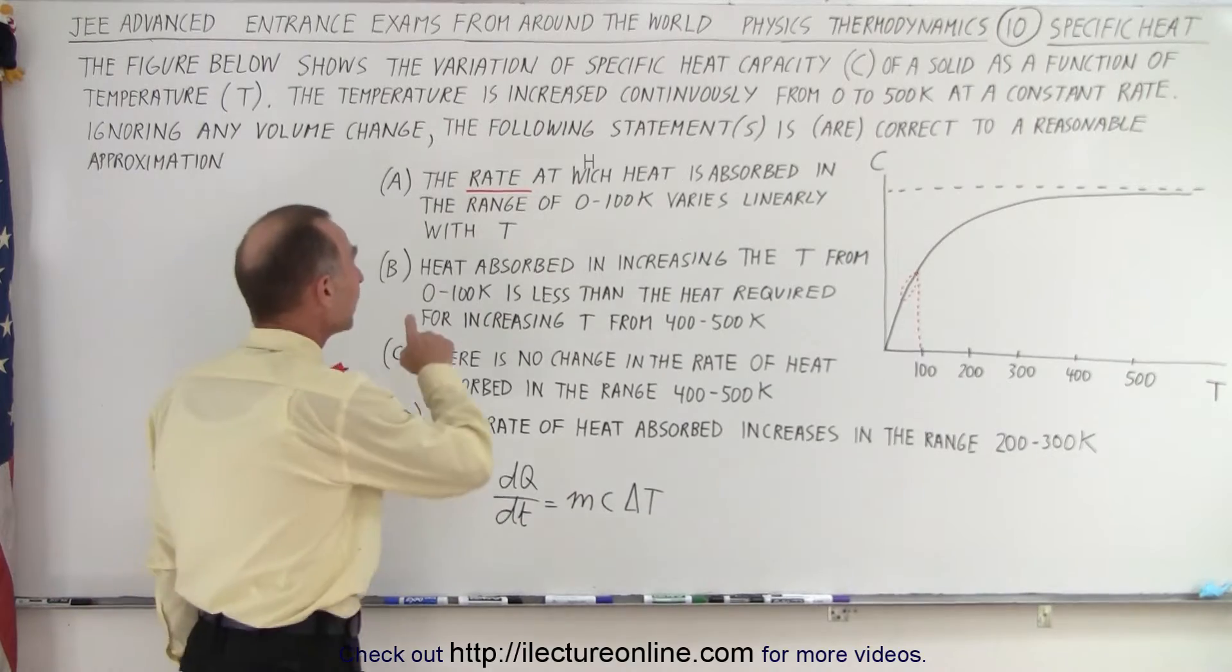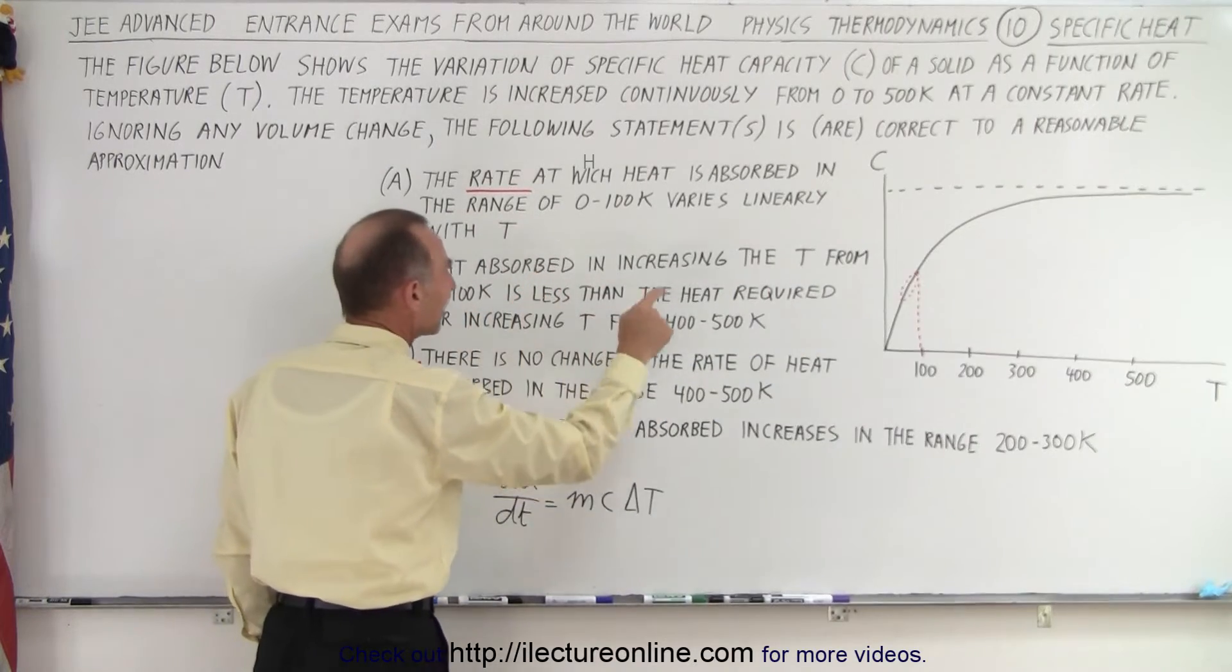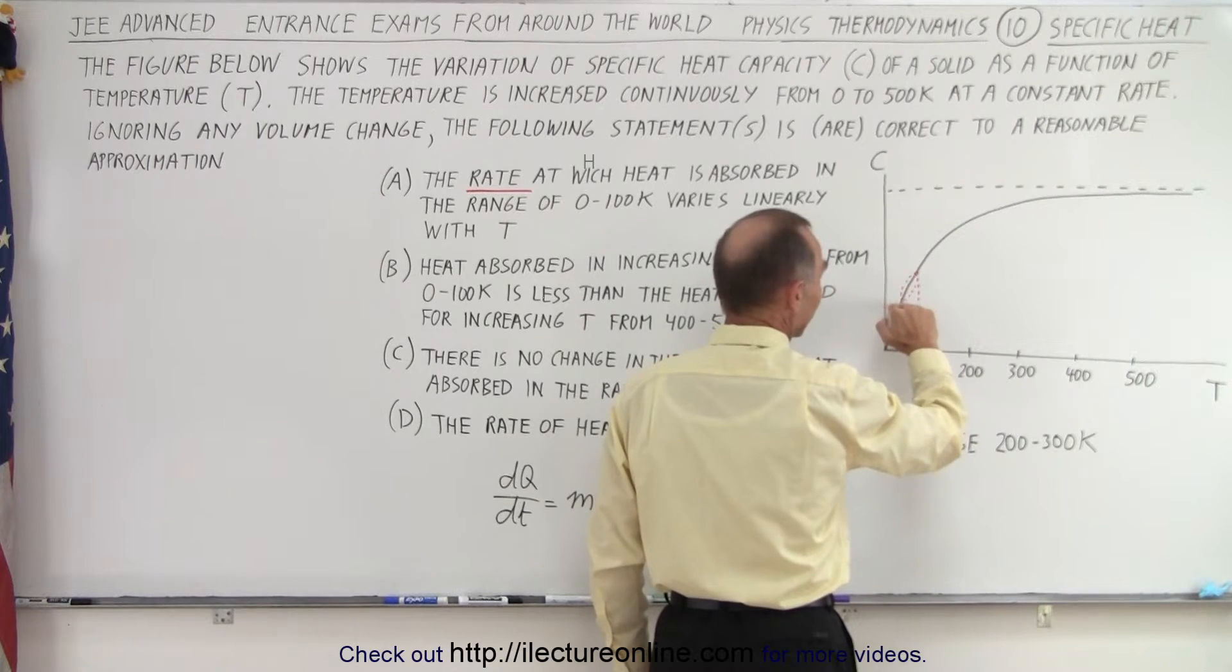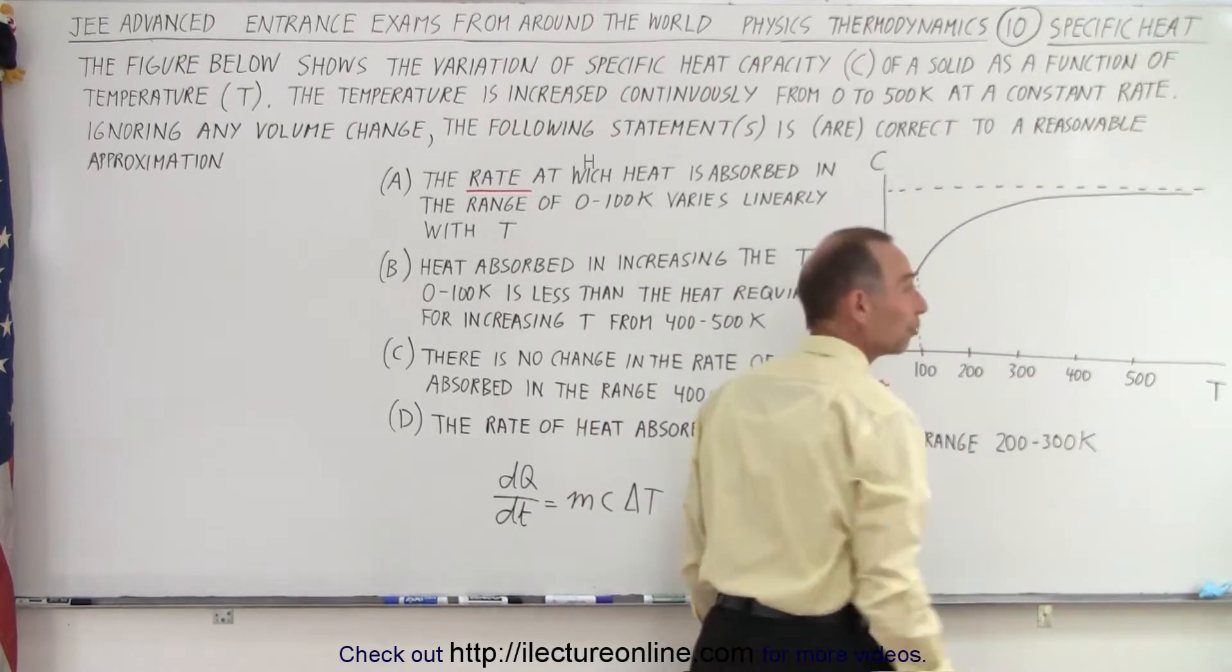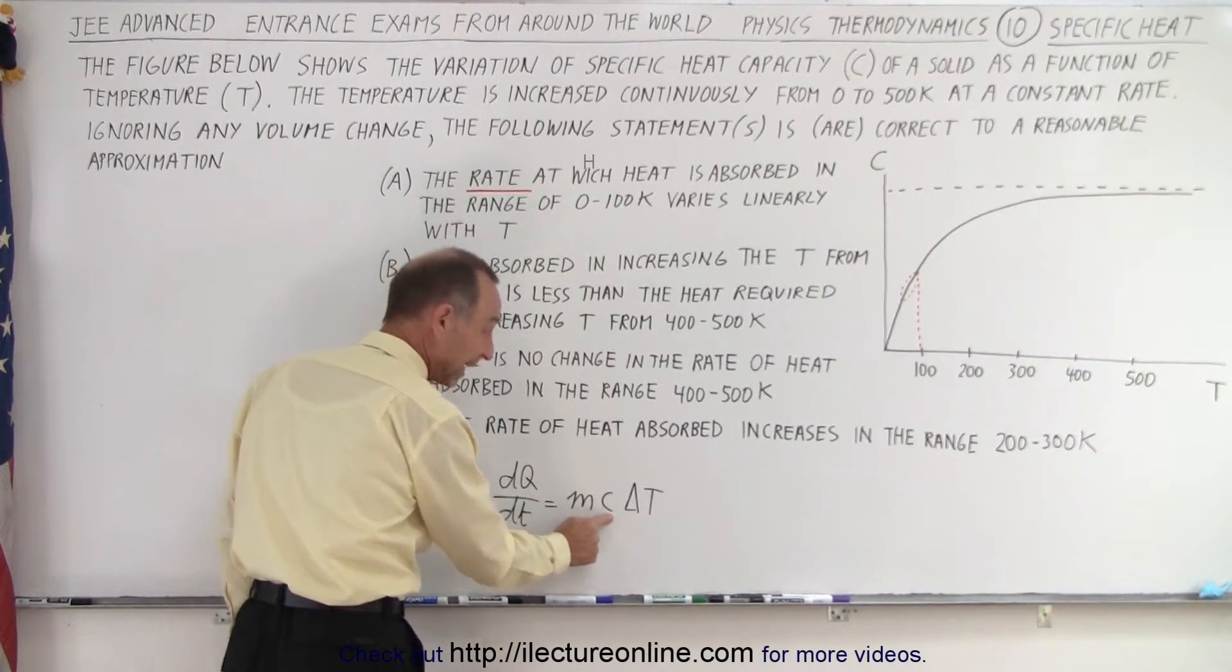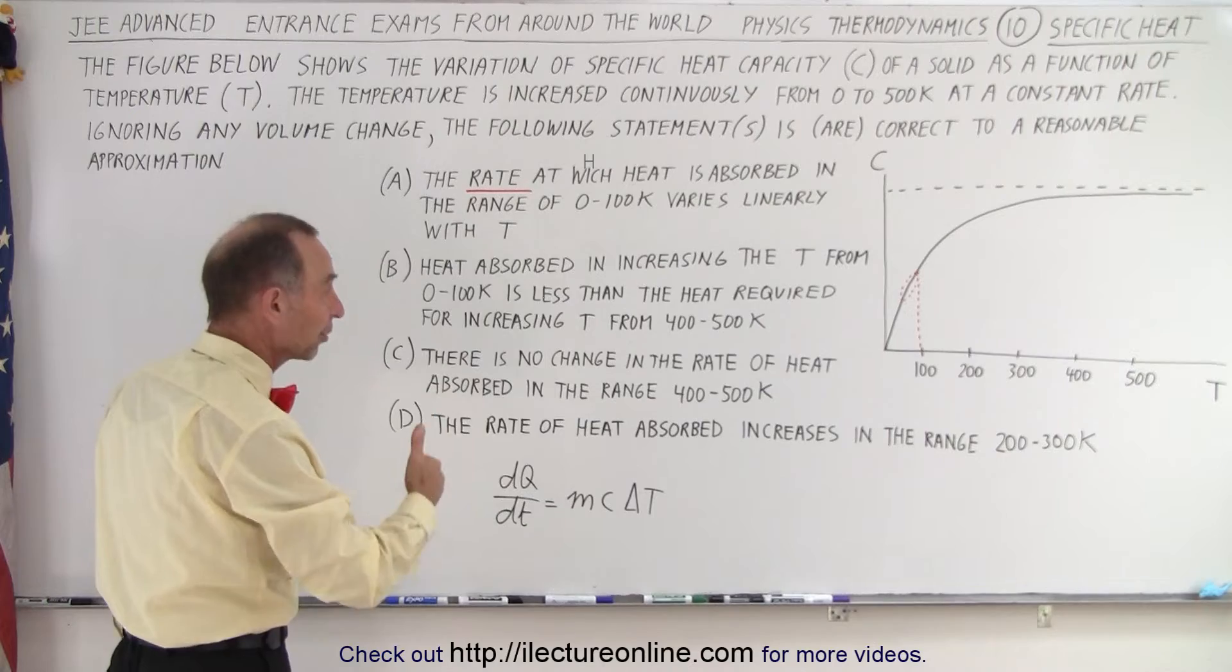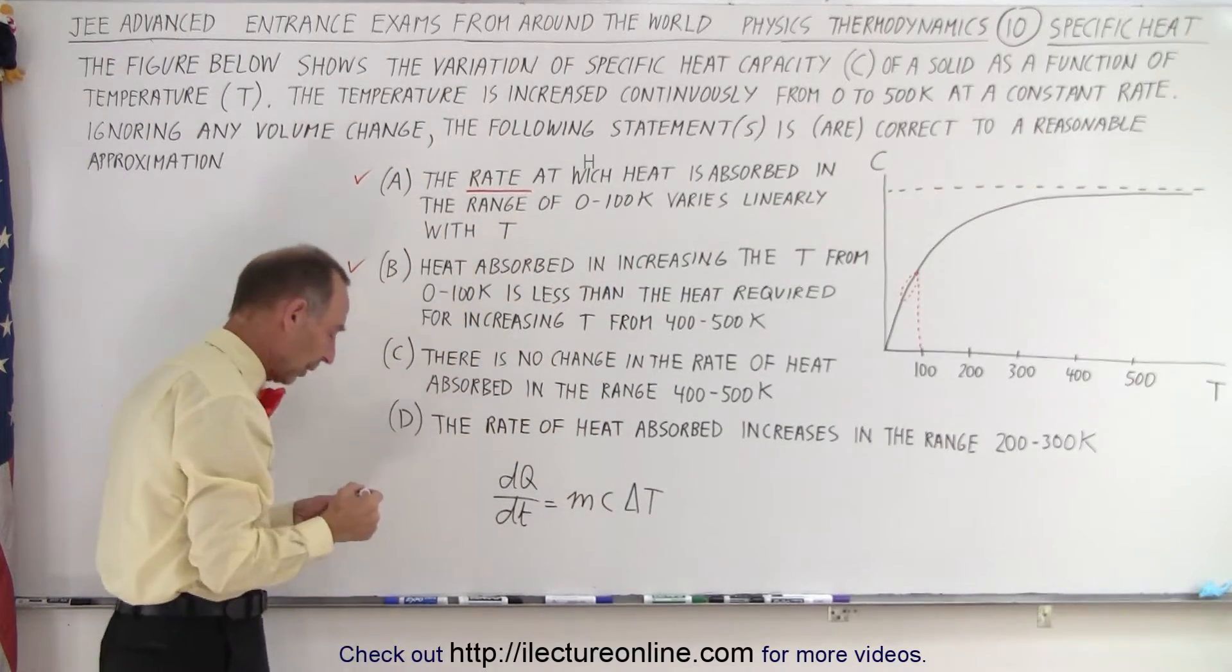For B, for answer B, it says heat absorbed in increasing the temperature from 0 to 100 K is less than the heat required for increasing the temperature from 400 to 500 K. So, you can see that going from 0 to 100 K, the average specific heat is about like this or the specific heat capacity is about like this. But from 400 to 500 K, it's way up here. It's a much greater specific heat or specific heat capacity. And since delta Q delta T is linearly proportional to the specific heat or the specific heat capacity, definitely if it's larger, that means you're going to have more heat absorbed during that period of time going from 400 to 500 than it is to go from 0 to 100. So, definitely B would be a correct answer. And if you assume that to be pretty well linear, then you say, well, A is a correct answer as well.